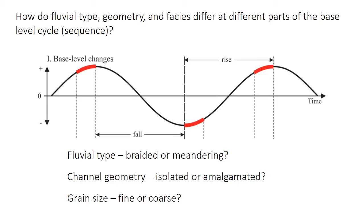We're really most interested in understanding how fluvial type, whether it's braided or meandering, the channel geometry or channel stacking pattern, which we'll come back to in a minute, and the facies, such as the grain size, differ throughout this base level cycle. The channel geometry, as I said, I'll explain a little bit more soon, but it basically refers to the relative proportion of channel and overbank deposits, whether the channels are single and isolated within a lot of overbank sediment, or whether the channels amalgamate one on top of each other without a lot of overbank sediment.